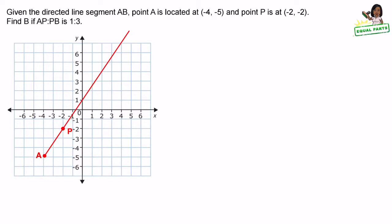Given the directed line segment AB, point A is located at negative 4, negative 5, and point P is located at negative 2, negative 2. Find B if AP to PB has a ratio of 1 to 3.